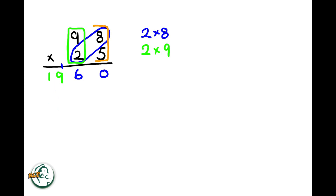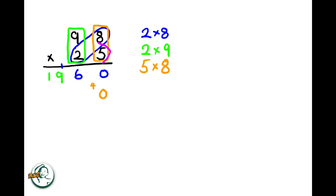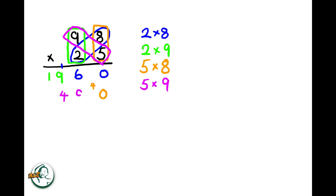Moving on to the other number, 5 multiplied by 8 is 40. We write down the 0 and carry over the 4. Next, we multiply 5 by 9, resulting in 45. Adding the carried over 4 to 45, we get 49.